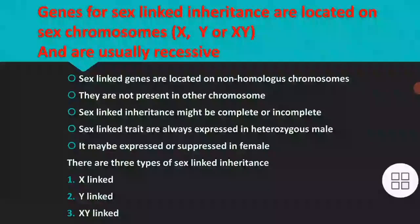Genes for sex-linked inheritance are located in sex chromosomes, and the sex chromosomes are X, Y, or XY. These genes are usually recessive. Sex-linked genes are located on non-homologous chromosomes — they are not present in other chromosomes, meaning they are not present in homologous chromosomes.